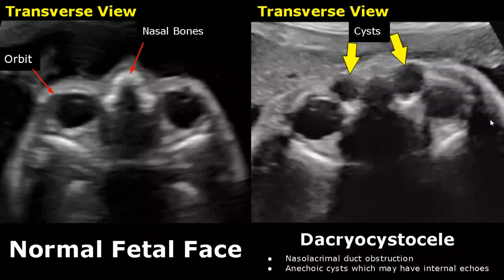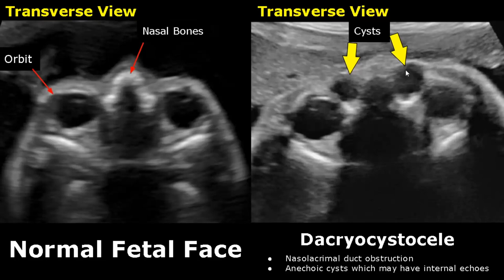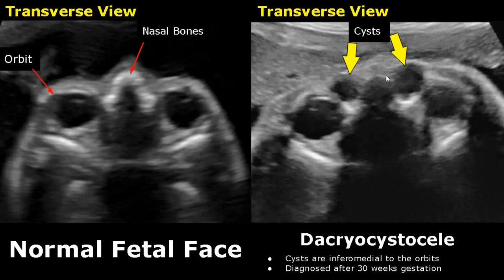Due to nasolacrimal duct obstruction, anechoic cysts may be formed. Sometimes these cysts have internal echoes. This is called dacryocystocele. These cysts are inferomedial to the orbits. We can see these cysts at the location of the nasolacrimal ducts, and they are diagnosed after 30 weeks gestation.